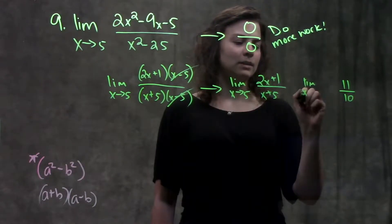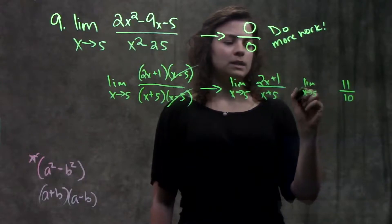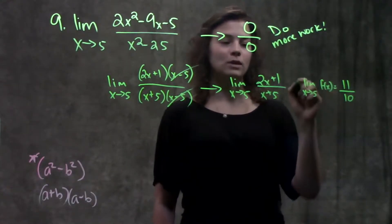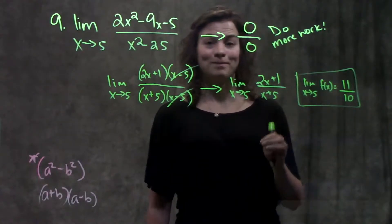That means that the answer to this question is the limit as x approaches 5 of f(x) is equal to 11 over 10. And that's it.